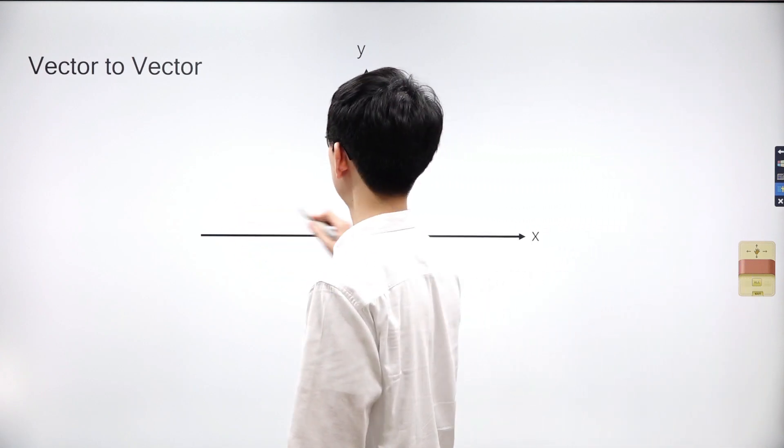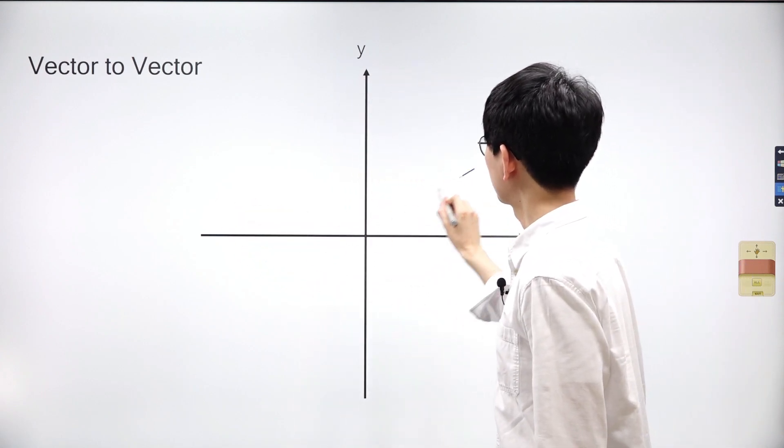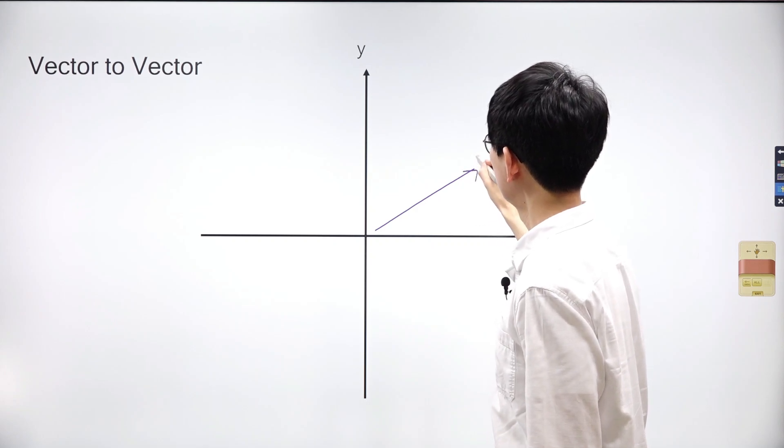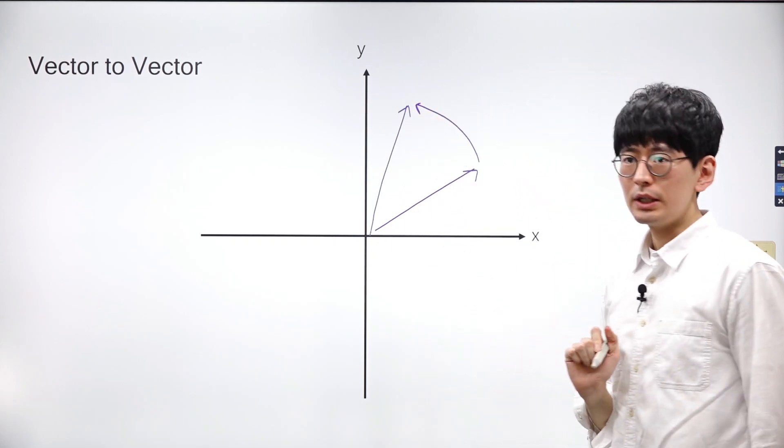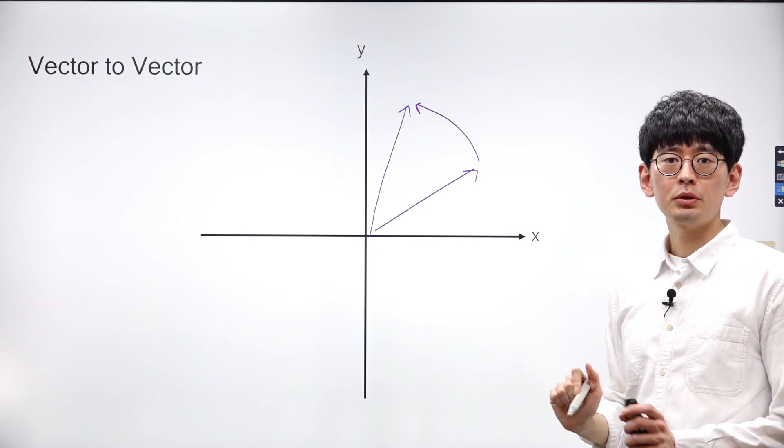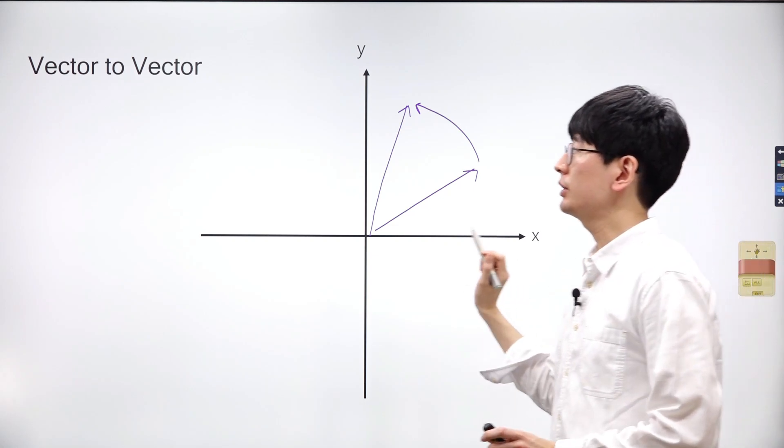Let's recap. When we apply matrix-vector multiplication to a vector on a two-dimensional plane, the vector undergoes a shift, resulting in new coordinates as the coordinate space adjusts or twists.